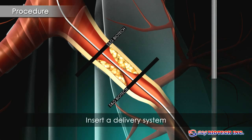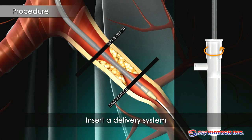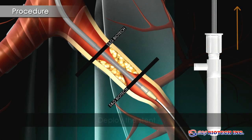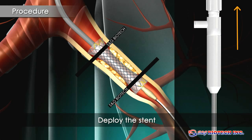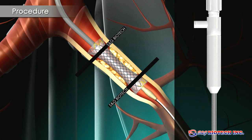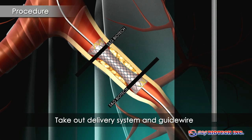Insert a delivery system. Deploy the stent. The stent should be just longer than the length of the stricture, taking into account any adjacent bifurcations. Take out the delivery system and guidewire.